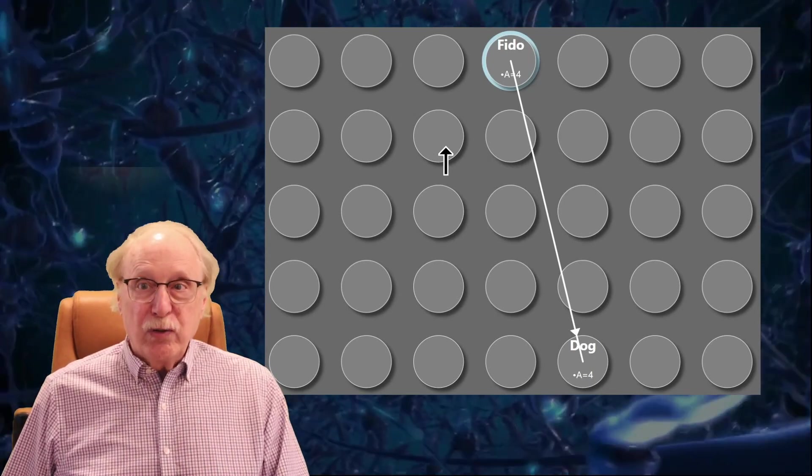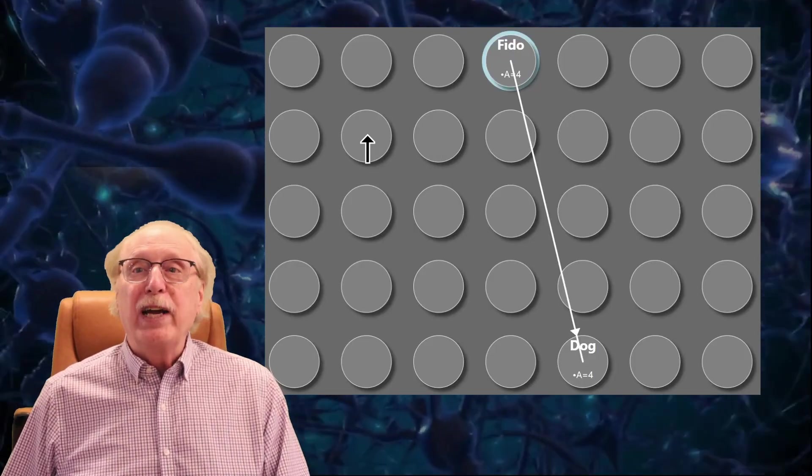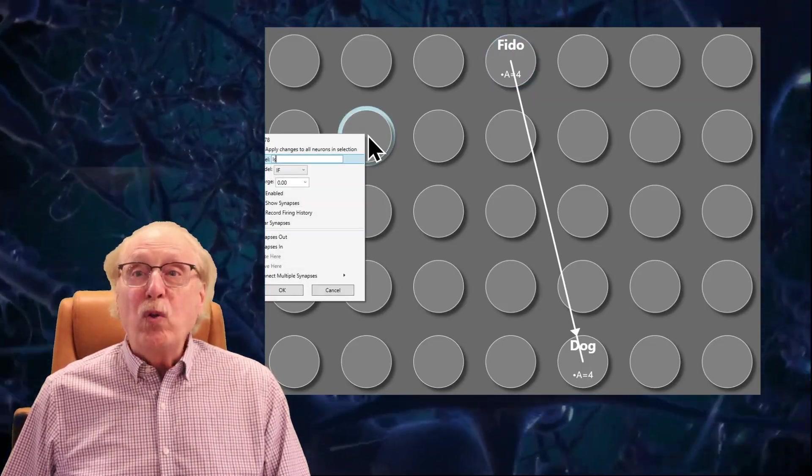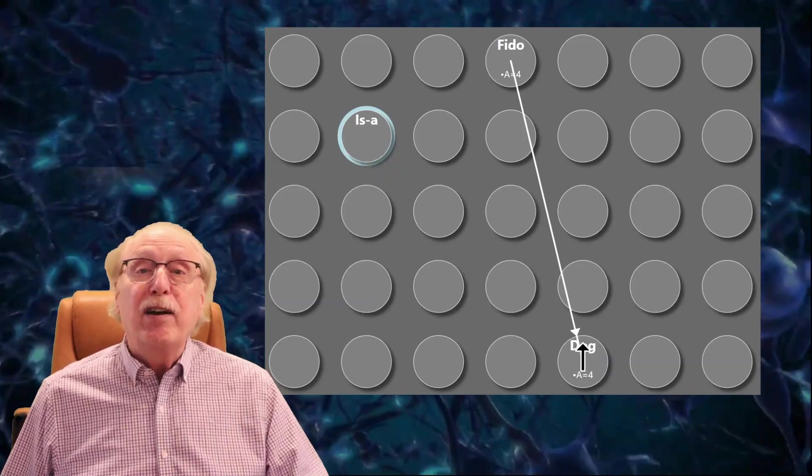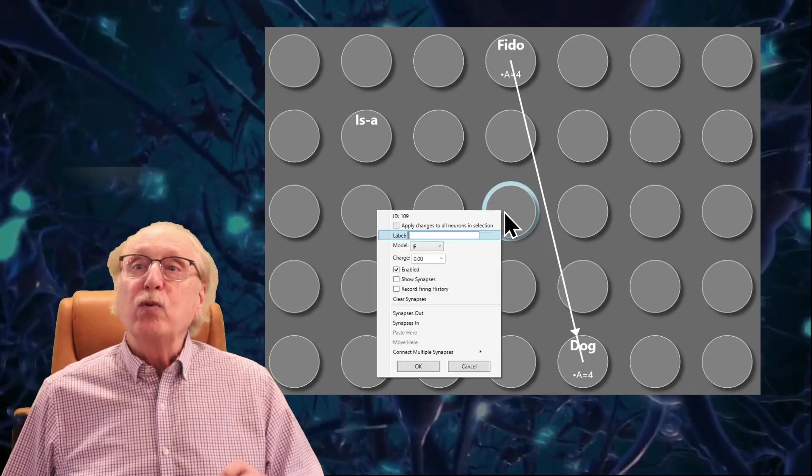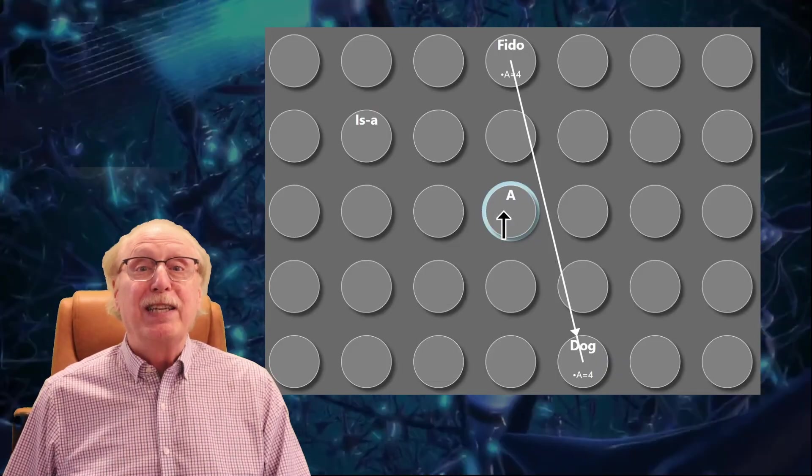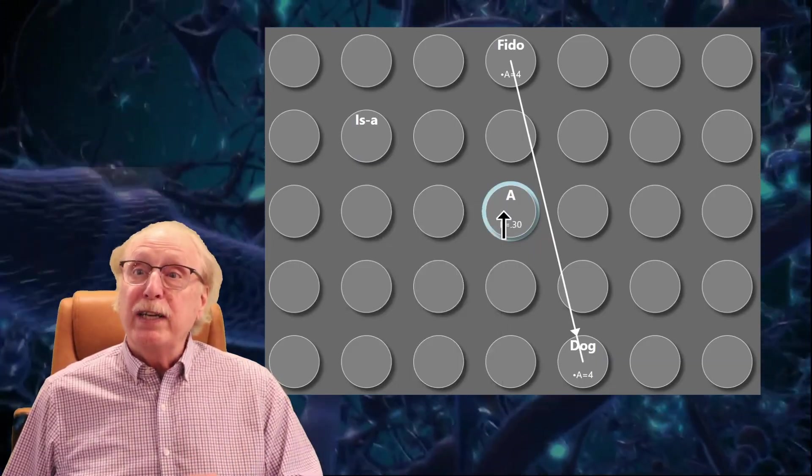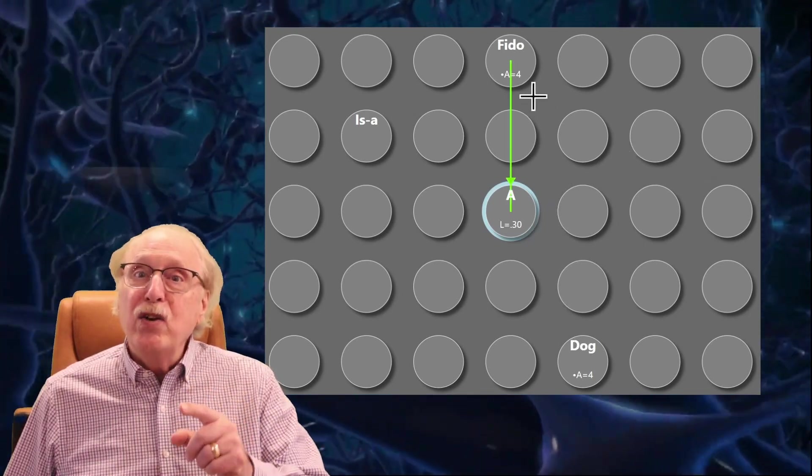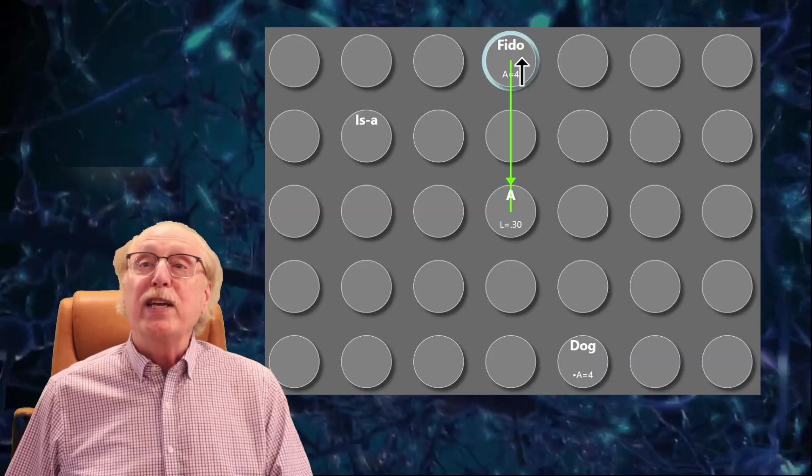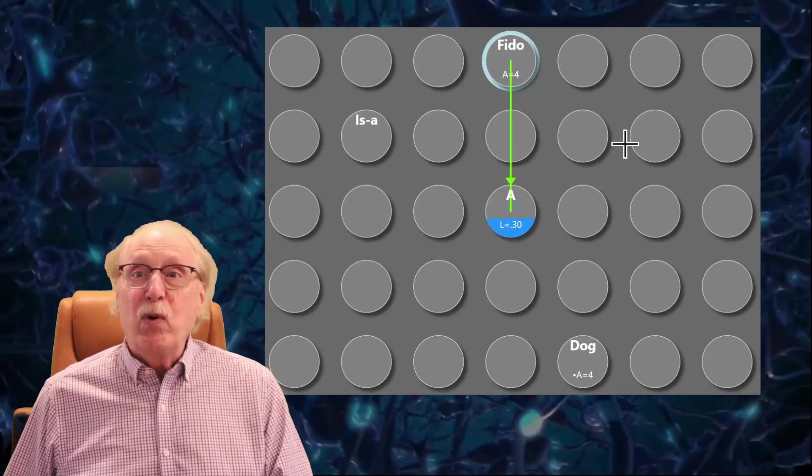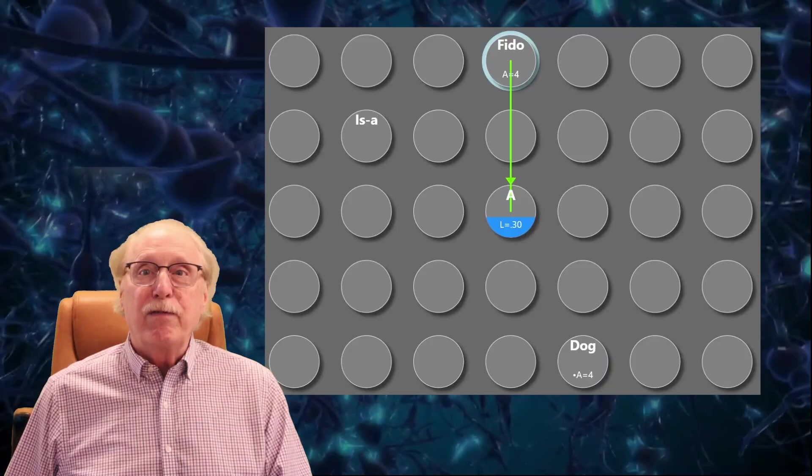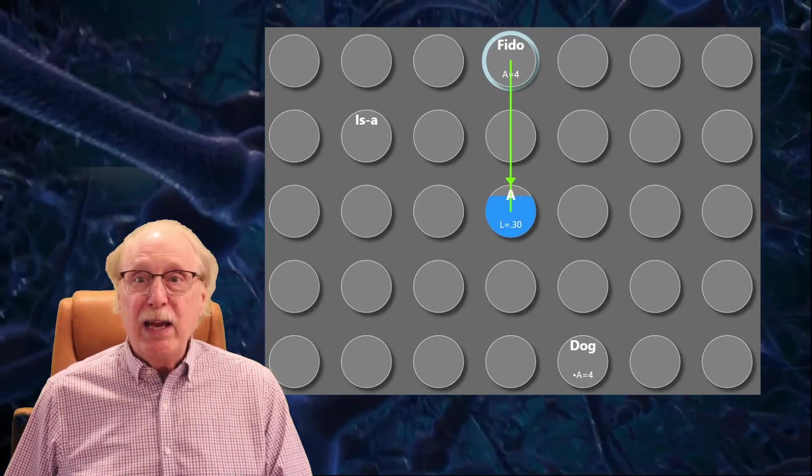Since we want the dog neuron to fire only if we're querying what Fido is, let's add a neuron and label it Iza. We want to fire the dog neuron only if both Fido and Iza are firing. We can accomplish this with a fourth neuron which I'll label A for convenience. I'll assign it a leakage rate and connect it to the Fido neuron via a synapse with a weight such that no amount of firing Fido will cause A to fire. In this case, a synapse weight of 0.6 is balanced with a leakage rate of 0.3, so that if I set the Fido neuron to fire at its maximum rate, neuron A will never fire.